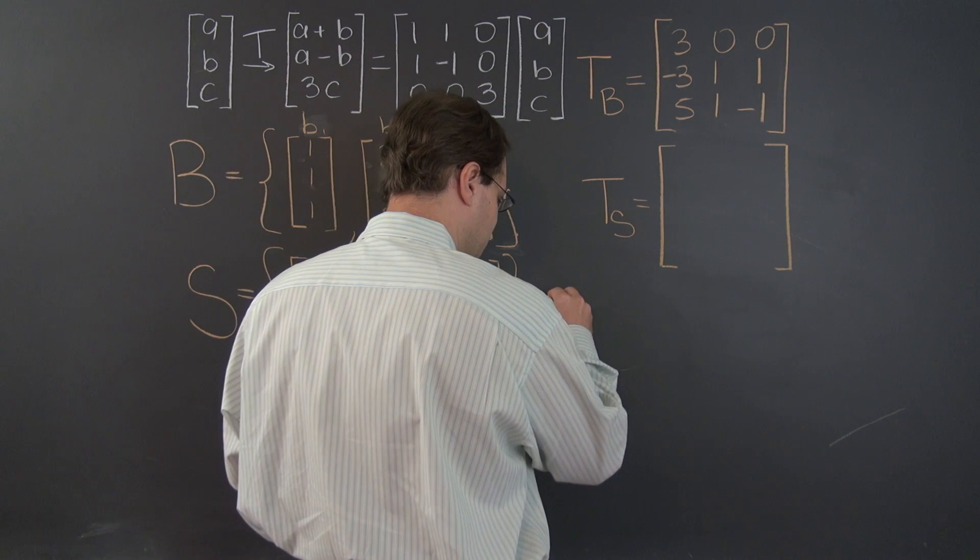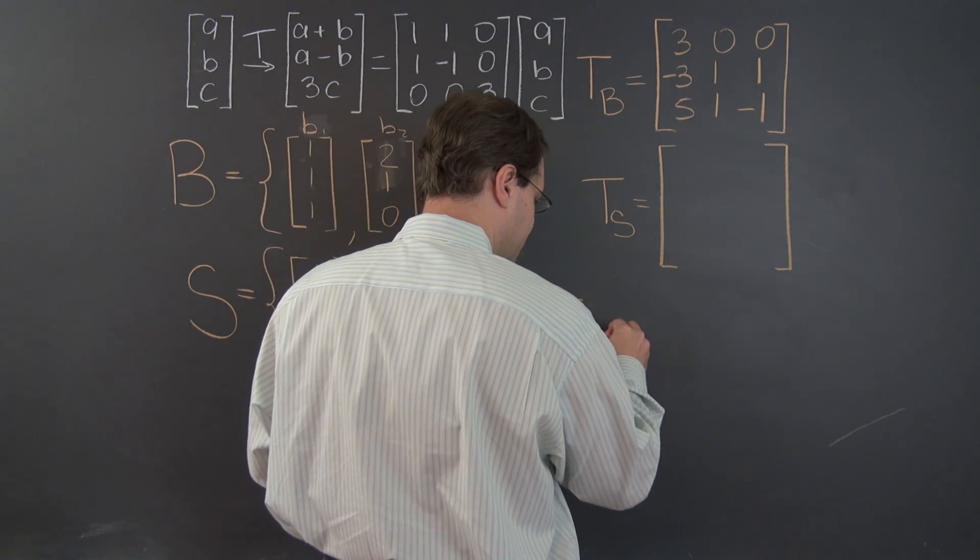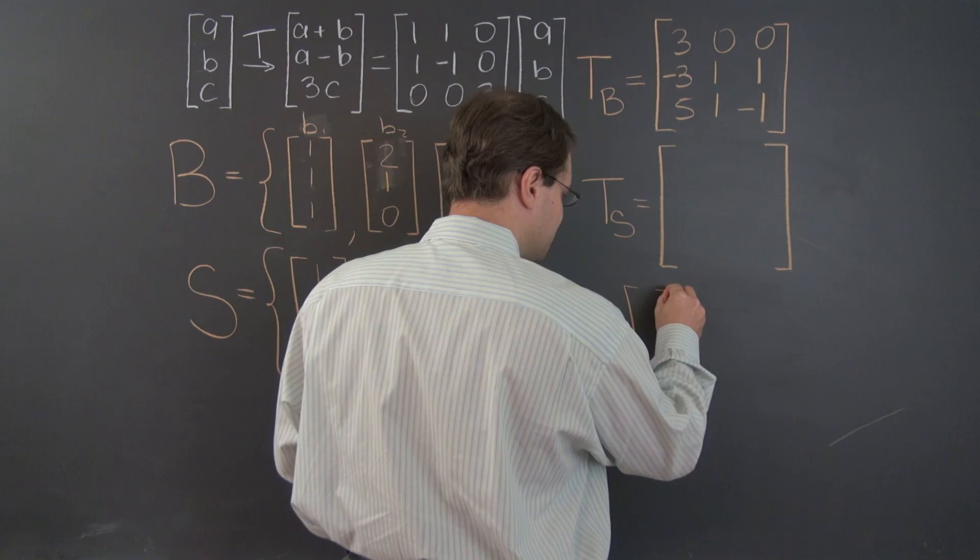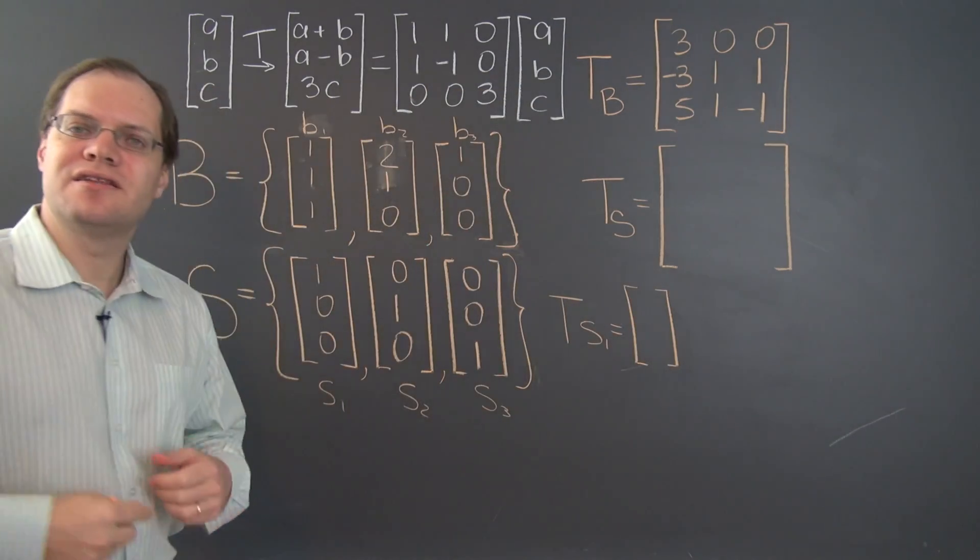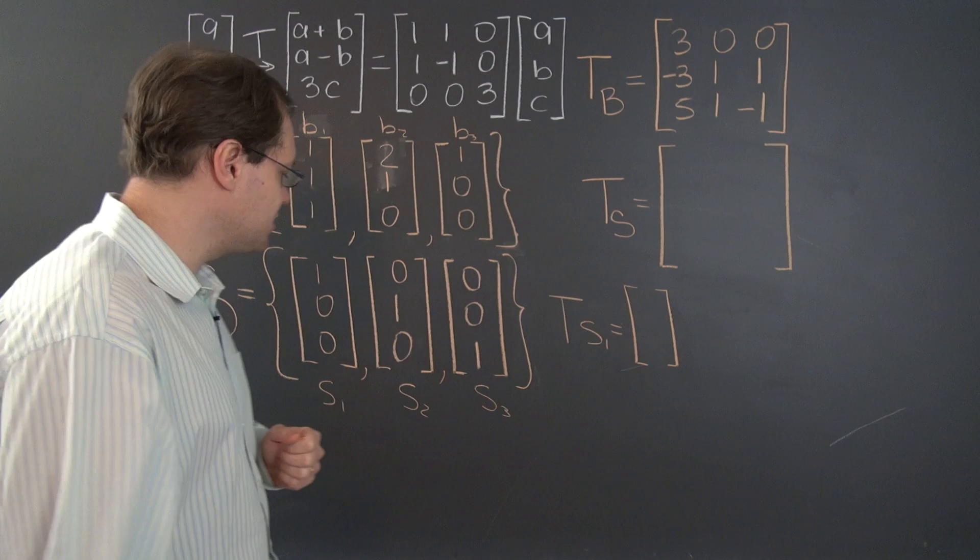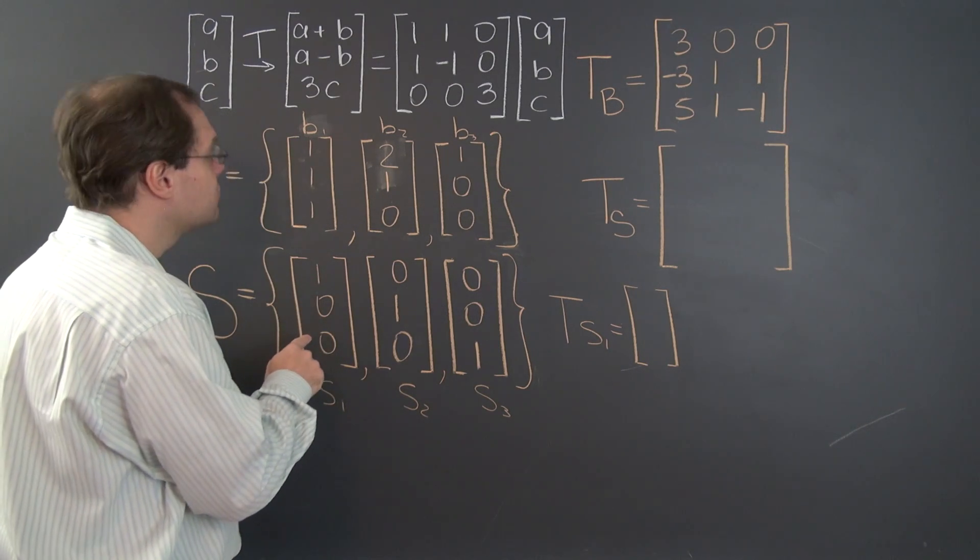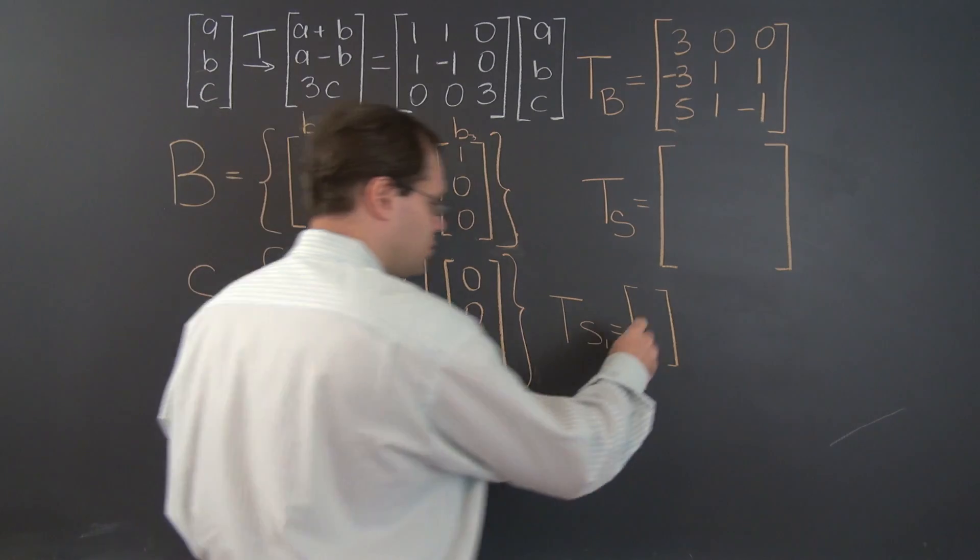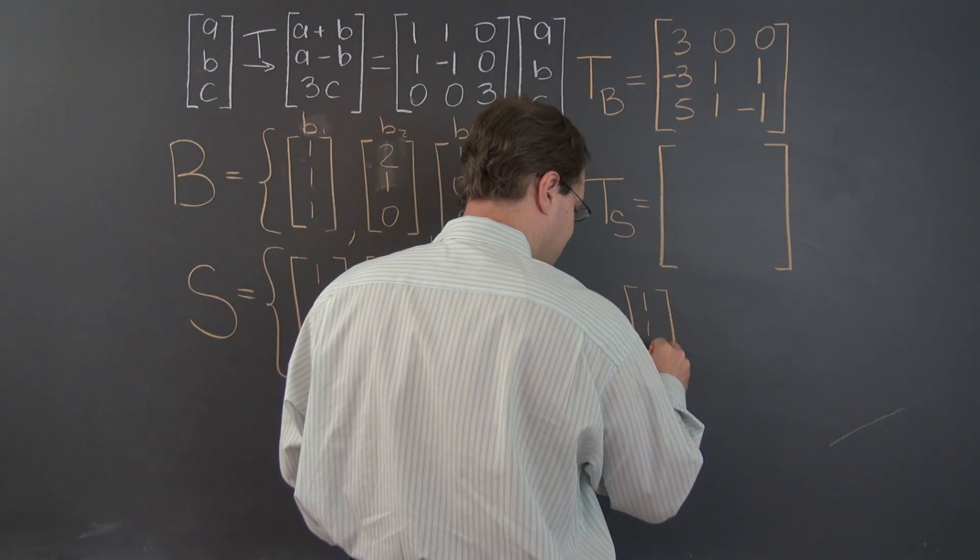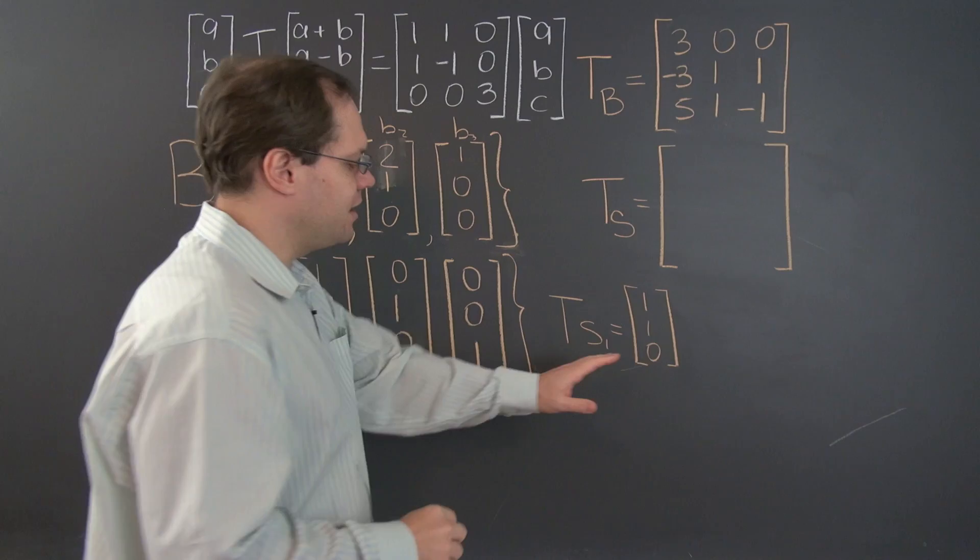So let's start with S1, T. So the transformation is the same. The sum of the first two entries, their difference, and the last entry multiplied by 3. So it will be 1, 1, 0. That's right, 1, 1, 0. And, once again,